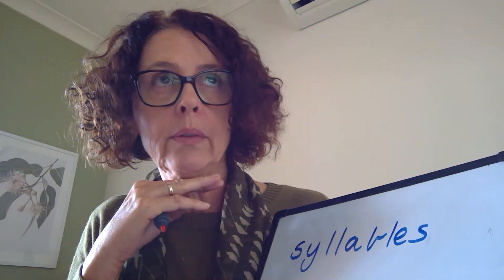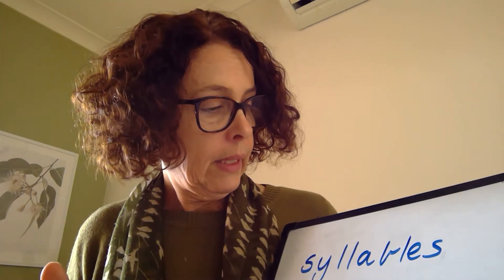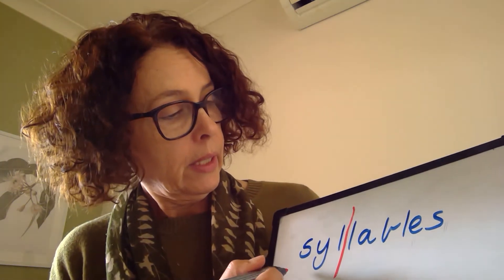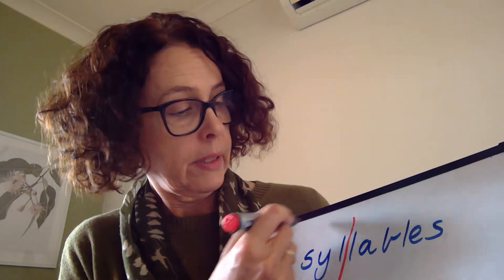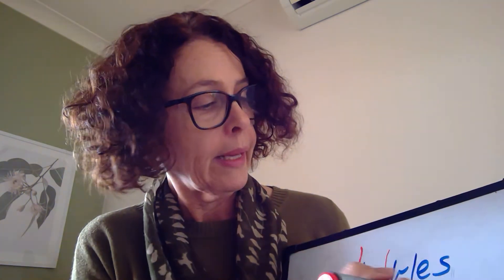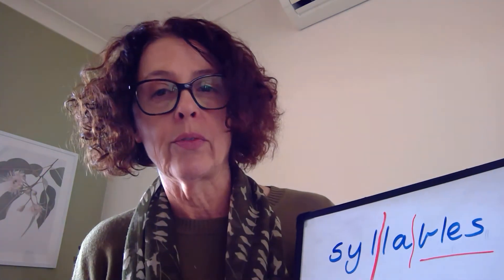When I said it — sil-la-bles — we know that if there is a double consonant, we have to break the word there for a syllable. Each syllable has to have a vowel, and this is an interesting one because in the word 'syllable', Y is acting as a vowel. You know that Y often acts as a vowel. And '-bles' is a common suffix that goes on the end of a word, so you don't break that up either. So 'syllables' has three syllables.